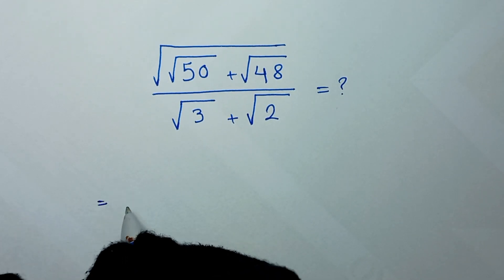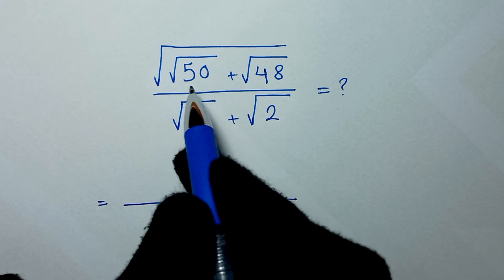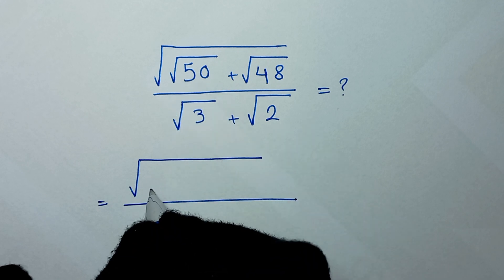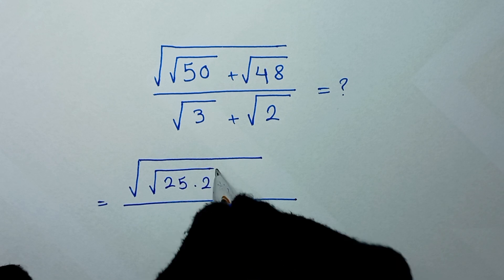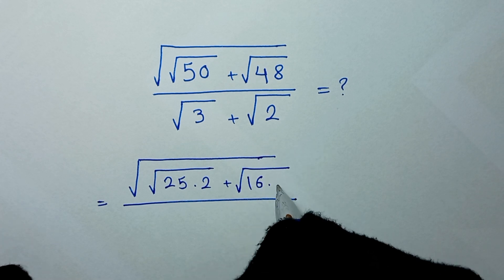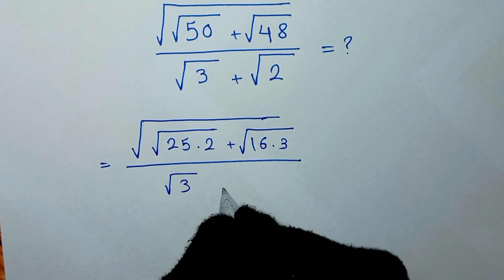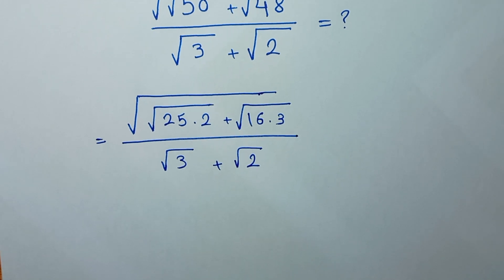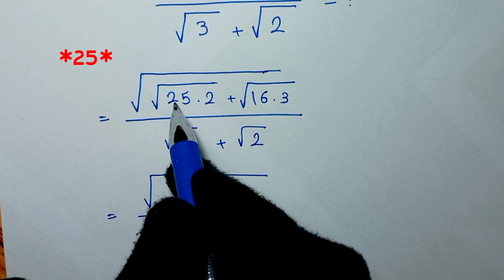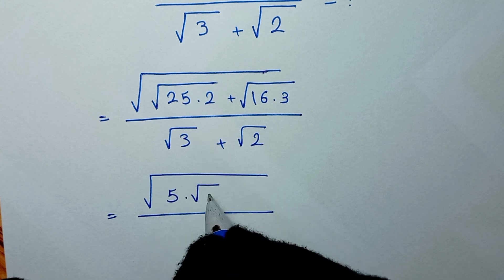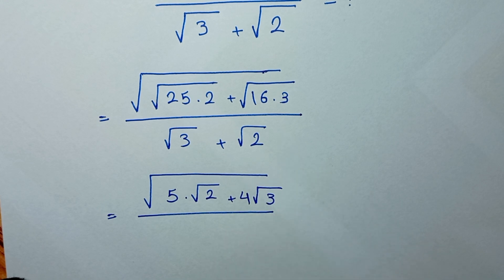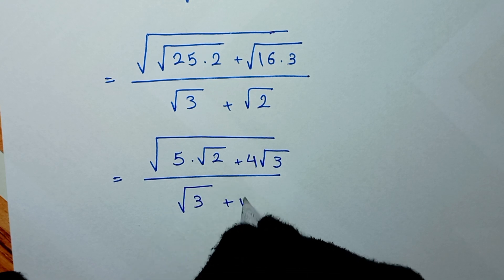In the first step we write: for the numerator we have square root of 50, and we can write square root of 50 as square root of 25 times 2. And plus, we have square root of 48, and we can write this as square root of 16 times 3, over square root of 3 plus square root of 2. Square root of 25 is 5, so we write 5 times square root of 2, and square root of 16 is 4, so we write 4 times square root of 3, over square root of 3 plus square root of 2.